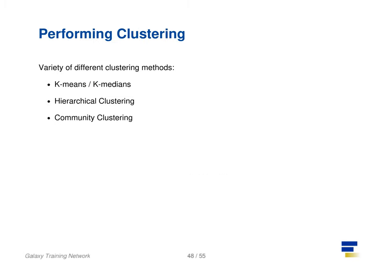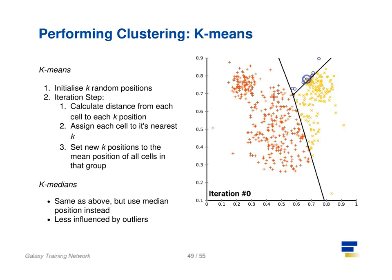To actually perform the clustering there are three commonly used methods: k-means, hierarchical, and community clustering. K-means and k-medians follow the same method: the number of clusters are defined beforehand and initialized in random positions. The positions are then updated by the contribution of the cells closest to it. This process occurs multiple times until the positions no longer significantly change or until a set number of iterations have been achieved. The final assignment of each cell then becomes the cluster assignment.